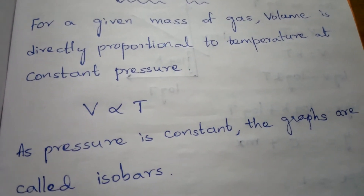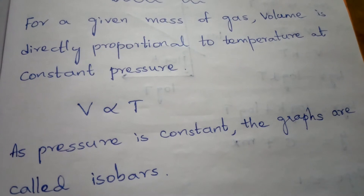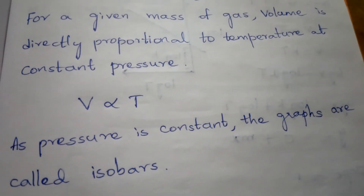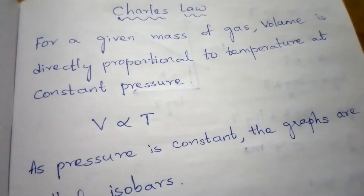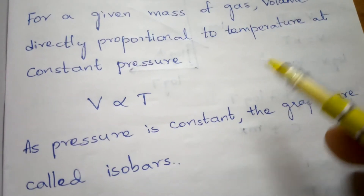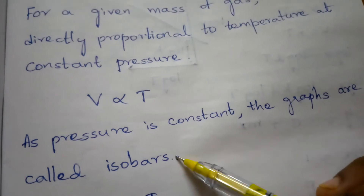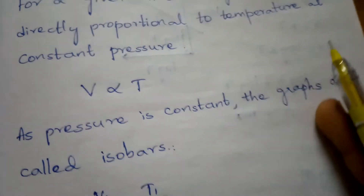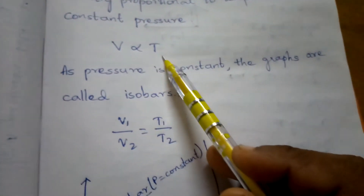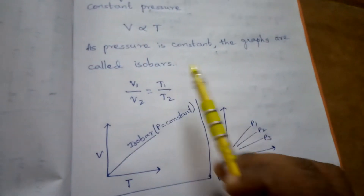Volume is denoted by V and temperature is denoted by T. Temperature is measured in the Kelvin scale, called absolute temperature. The condition here is constant pressure. Graphs plotted at constant pressure are called isobars. At constant volume they are called isochores. At constant temperature, isoperms. Since V is proportional to T, we write V1/V2 = T1/T2.